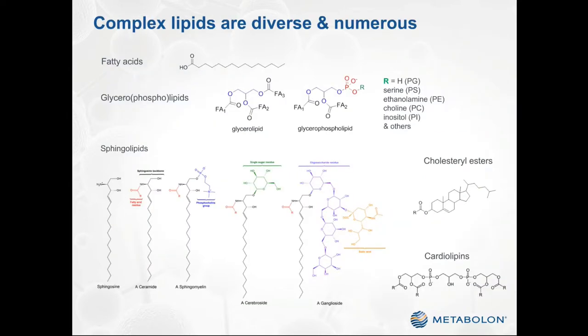Given this vast diversity of biological roles, it therefore isn't surprising that complex lipids also fall into a vast diversity of chemical structures. Fatty acids are the basic building blocks of most complex lipids. Glycerolipids consist of one or more free fatty acids conjugated to a glycerol backbone. And in the case of glycerophospholipids, the lipid is further decorated by one of a wide range of highly polar head groups, such as phosphocholine. Sphingolipids utilize an alternative backbone called sphingosine. And a variety of additional fatty acid conjugates, such as cholesterol esters and cardiolipins, further contribute to the diversity and complexity of a lipidome.